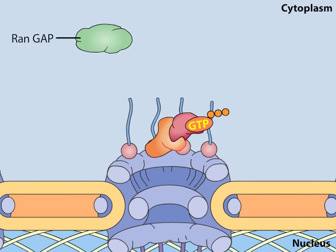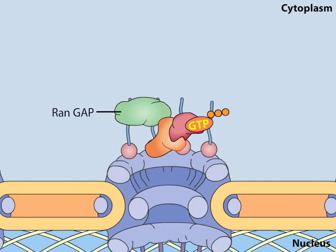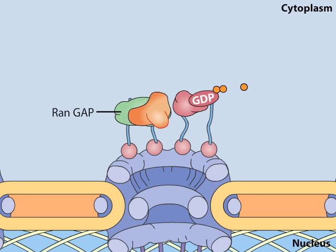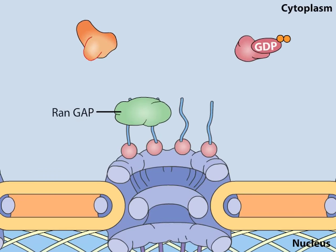A protein in the cytoplasm called RAN-GAP, for GTPase-activating protein, stimulates RAN to hydrolyze its GTP to GDP, an action that triggers RAN to release importin back into the cytoplasm.